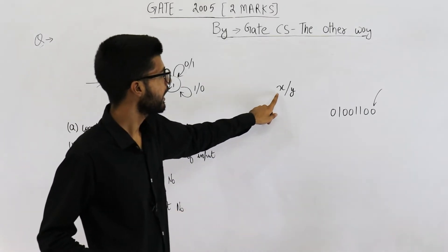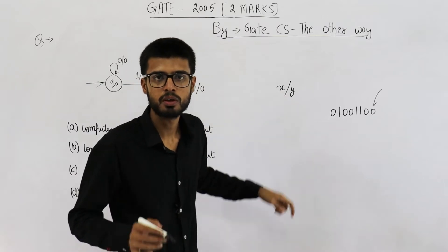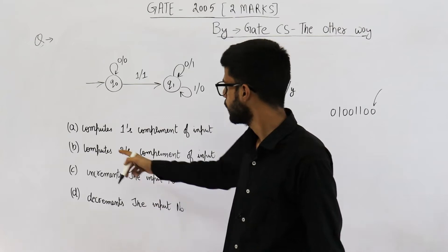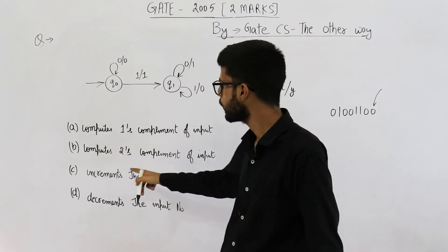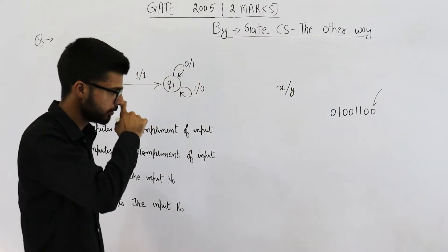They are mentioning x slash y means if x is the input, y will be the output. You are required to find out what is this machine doing. Is it computing one's complement of input or two's complement or is it incrementing the input or decrementing the input. Let us see what is happening.